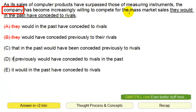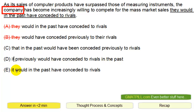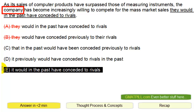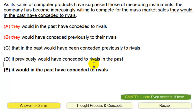Willing to compete for the mass market sales — 'it,' meaning the company — would. It previously would have conceded to rivals in the past, versus it would in the past have conceded to rivals. This is fewer words. This is clear and probably the answer.